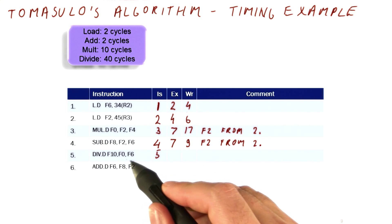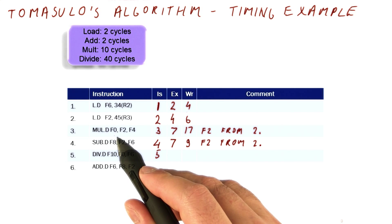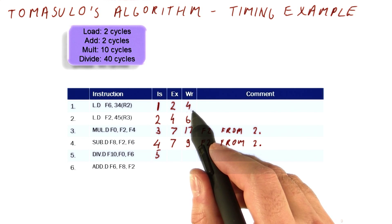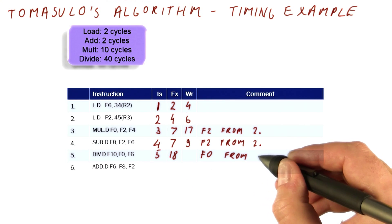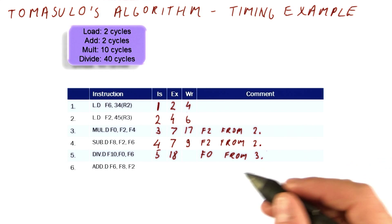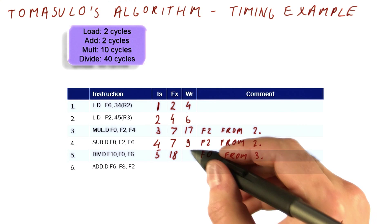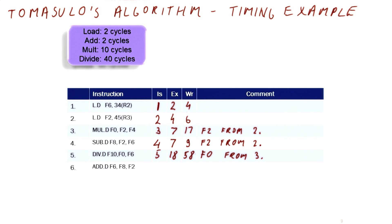Well, look for F0 and F6. F0 comes from the multiply at 17. F6 comes at four, so we will be able to execute in cycle 18 here, because we were waiting for F0. And it's a divide, so it's going to try to broadcast at cycle 58.